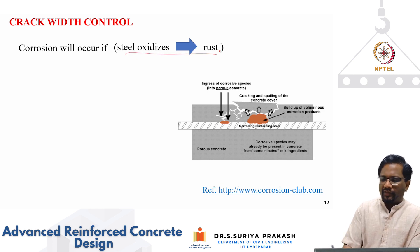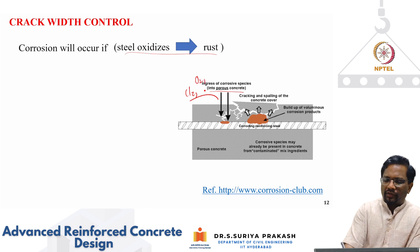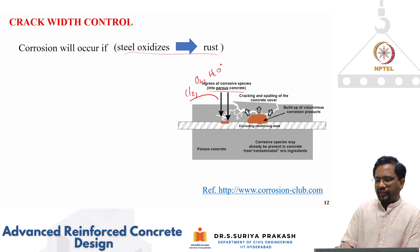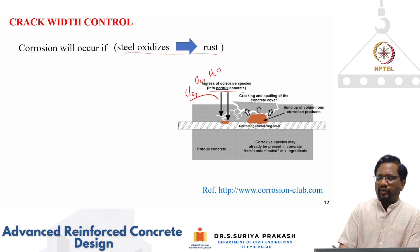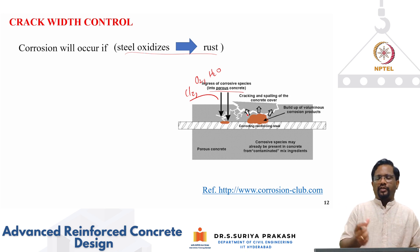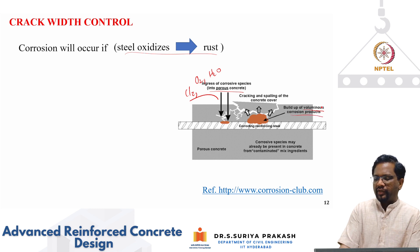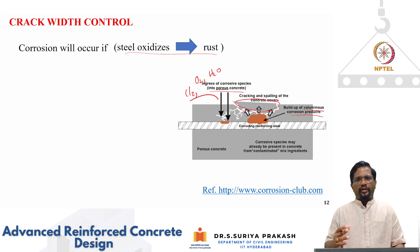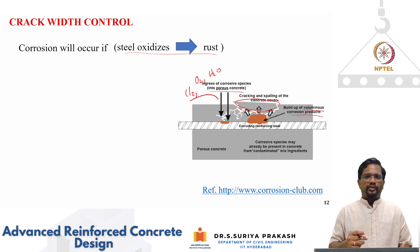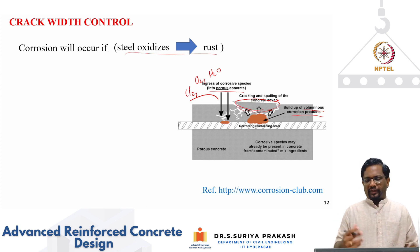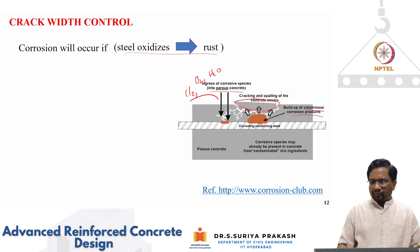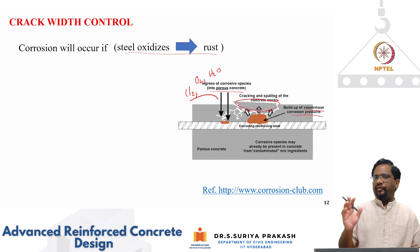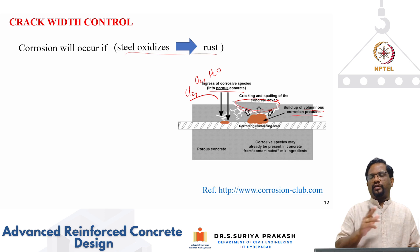When steel oxidizes to rust, ingress of corrosive species — chloride, oxygen, moisture — through porous concrete reaches the steel, forming an electrochemical cell that initiates corrosion. Iron oxide volume is seven to eight times larger than iron itself, producing voluminous corrosion products that put pressure on surrounding concrete, causing cracking and spalling. Concrete can be made non-porous using pozzolanic materials with a dense microstructure. However, even with good mix design, if cracks form under service loads they create passages for corrosion — so crack widths must be limited per exposure condition.